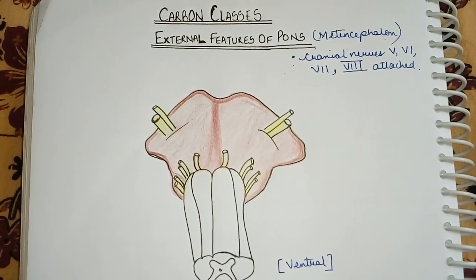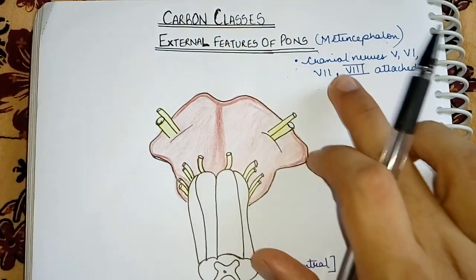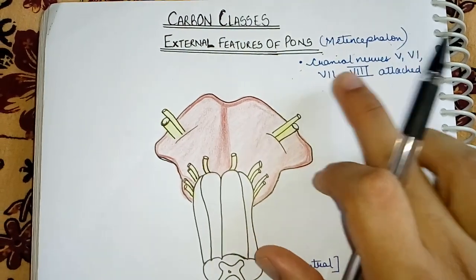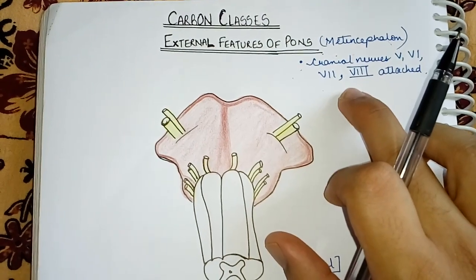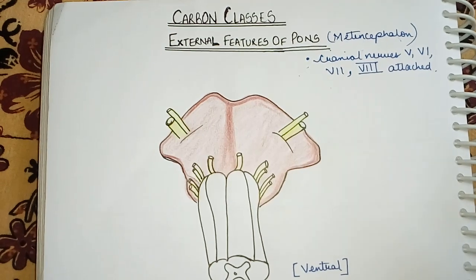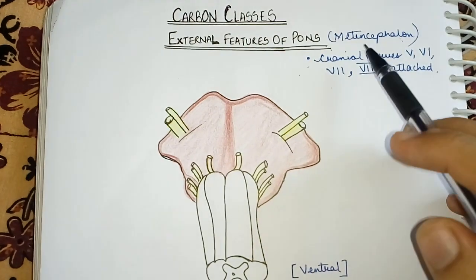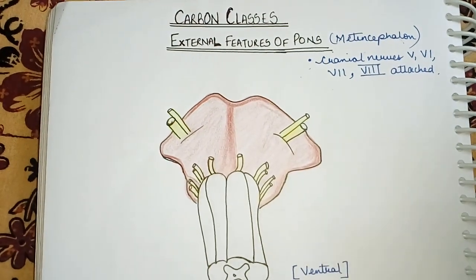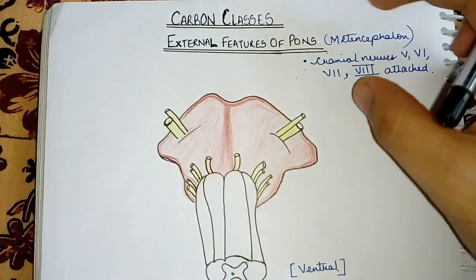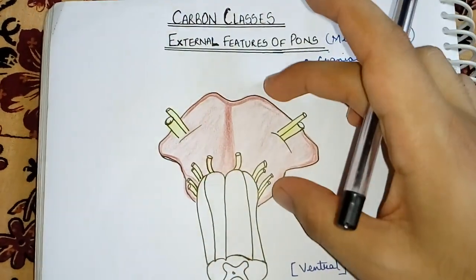Regarding the external features, first, it is simply called metencephalon, and cranial nerves attach here — the 5th, 6th, 7th, and 8th. So these are trigeminal, abducent, facial, and vestibulocochlear — also called auditory. These nerves attach to the pons. As shown in the colored diagram, this is your pons; below it is the medulla and above it is the midbrain. Today we are going to study the pons.